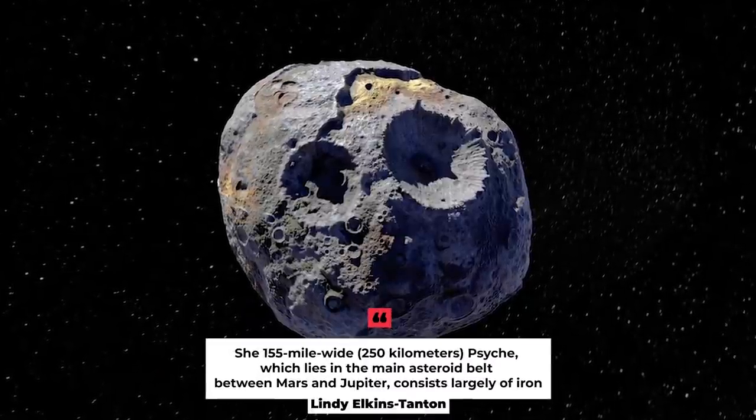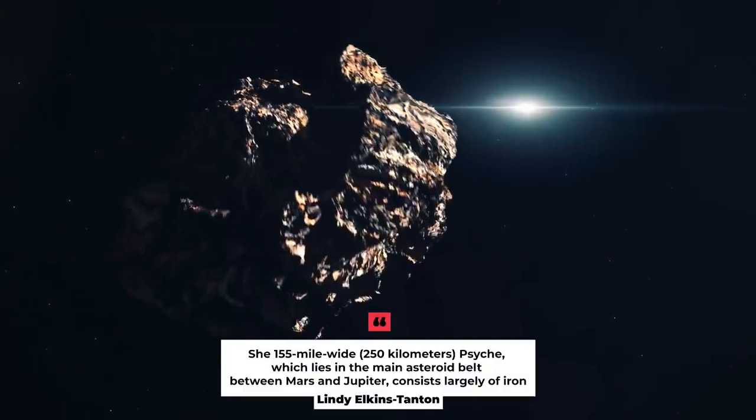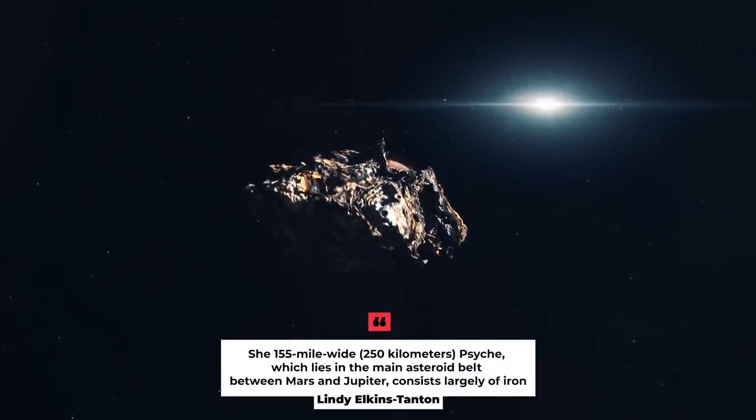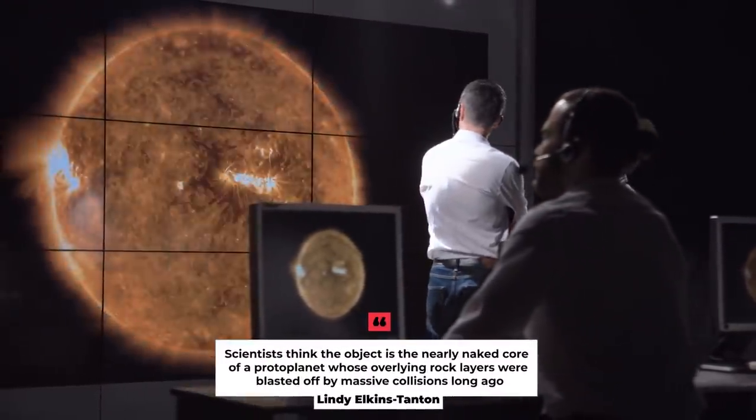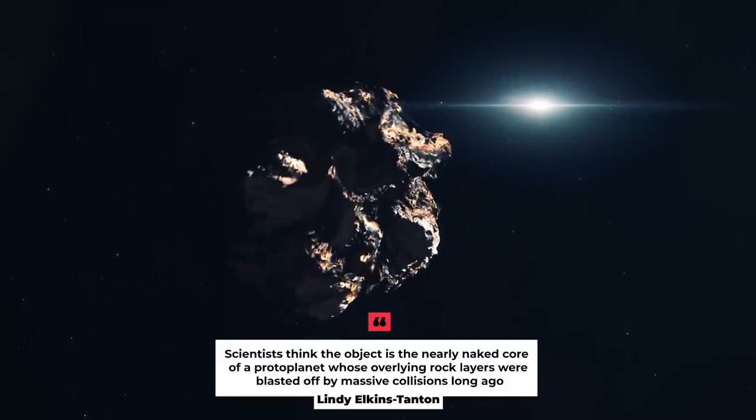The 155-mile-wide, 250 kilometers, Psyche, which lies in the main asteroid belt between Mars and Jupiter, consists largely of iron. Scientists think that the object is the nearly-naked core of a protoplanet, whose overlying rock layers were blasted off by massive collisions long ago.